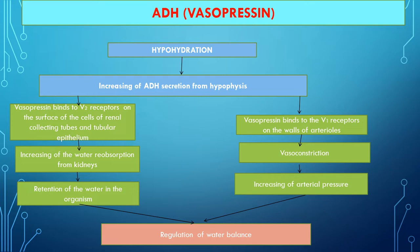Antidiuretic hormone enters the neurohypophysis and then the blood. It binds to V2 receptors — because another name of this hormone is vasopressin — located on epithelial cells of collecting tubules of the kidneys, opening water channels called aquaporins, accelerating water reabsorption. In low concentration, antidiuretic hormone has antidiuretic effects. In high concentration, it causes vasoconstriction and increased blood pressure by attaching to V1 receptors on the vascular wall, accelerating calcium entry into the cytoplasm and causing contraction of smooth muscle cells.